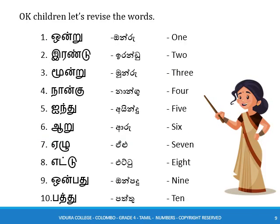Okay children, let's revise the words. Onru - one. Irandu - two. Moonru - three. Nangu - four. Aindu - five. Aaru - six. Elu - seven.